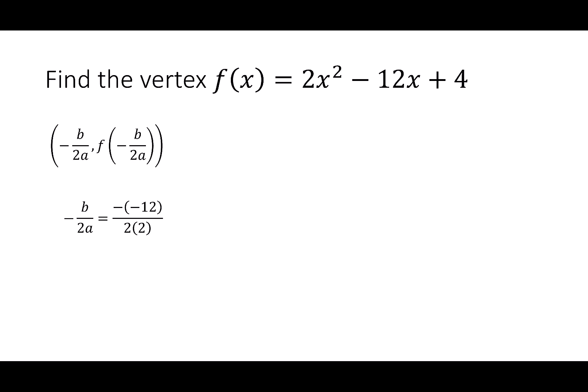To start, I have -(-12)/(2 × 2). Our b term was negative, and I don't want to lose the two negative signs, so I put the -12 in parentheses so you can see the double negative. -(-12) is 12. 2 times 2 is 4. 12/4 gives me 3. So I have the h term of my vertex.